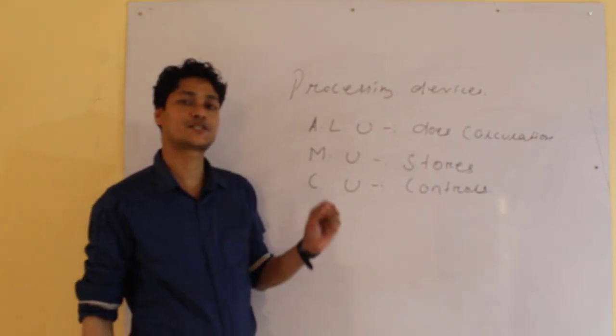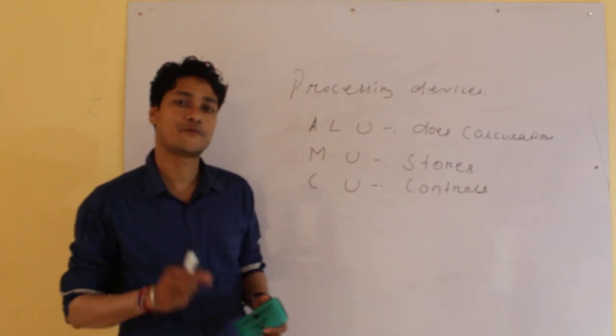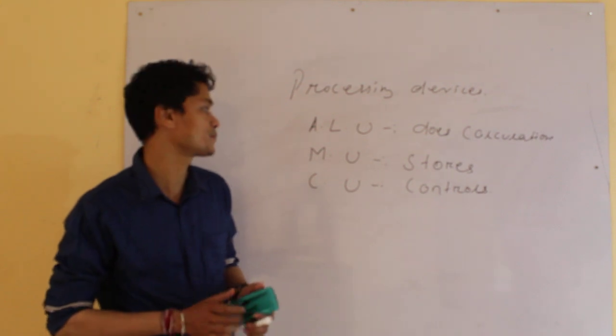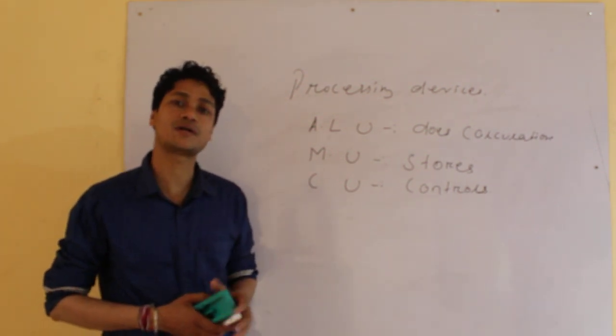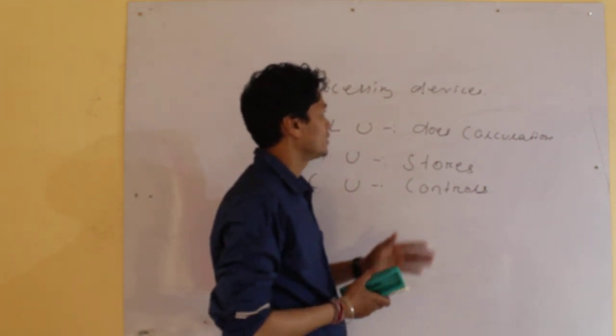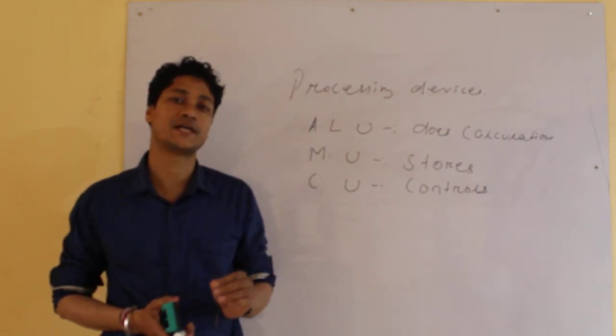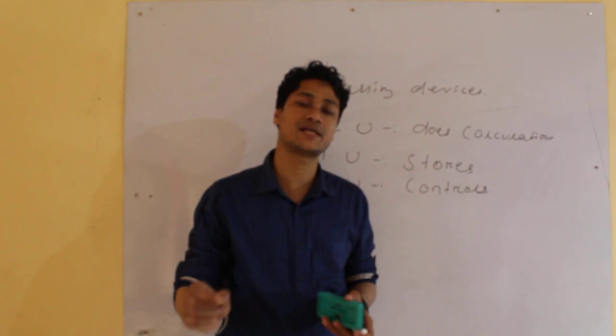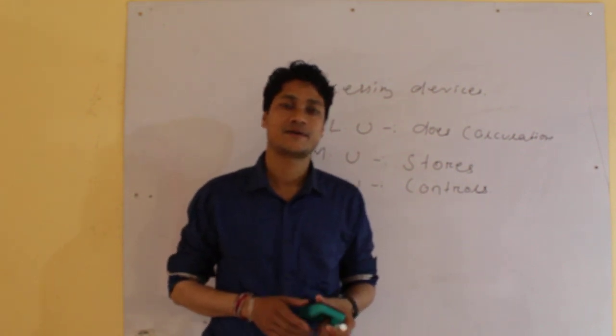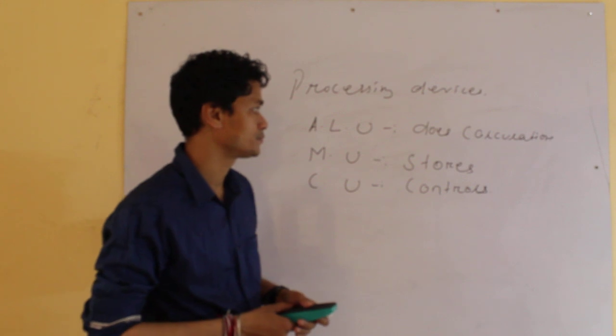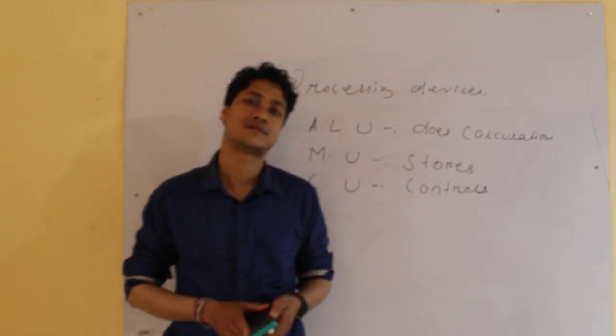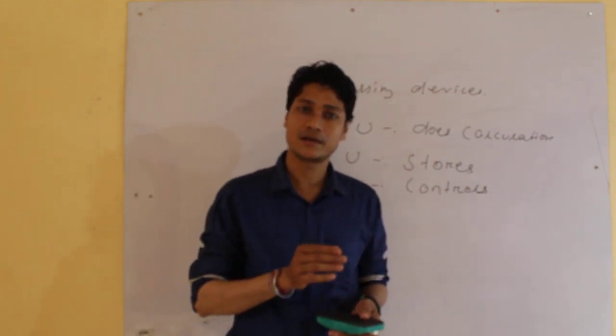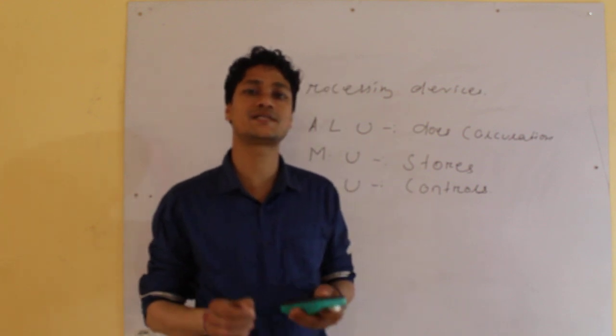OK children, this much for you today. And before finishing my class I want to ask you some questions from today's class. What did we learn? Now I am giving you something to write. First, you write the use of the following devices: write joystick, microphone, light pen, and scanner. You write the use for each of these input hardware.